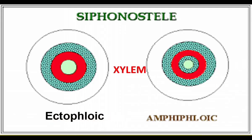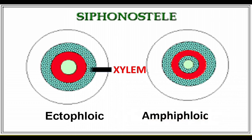Let us compare ectophloic and amphiphloic. In ectophloic siphonostele, phloem is found only around the outer part of the xylem. In amphiphloic, a ring of phloem is inside the xylem and another ring is found outside the xylem.